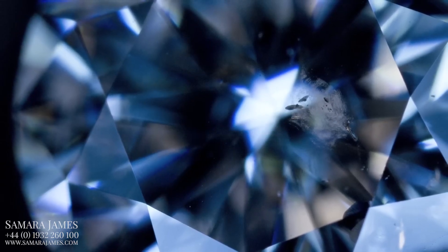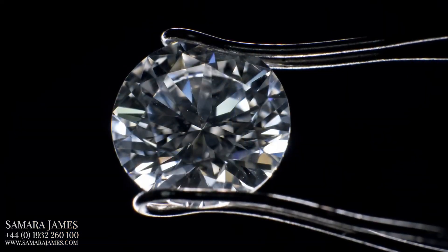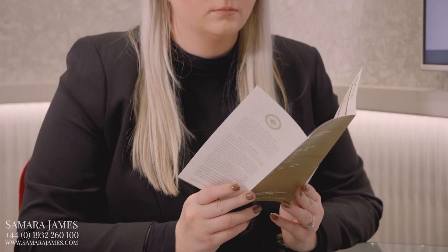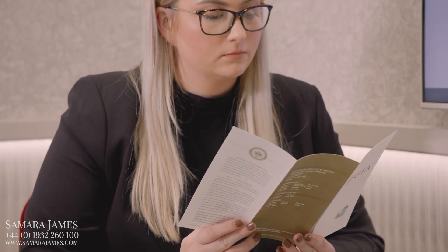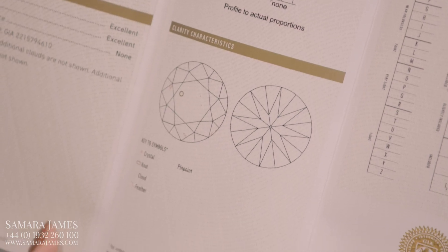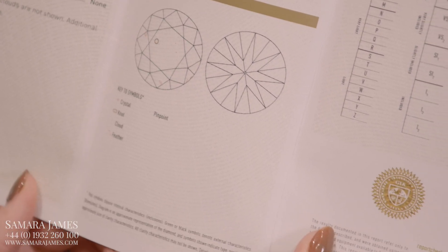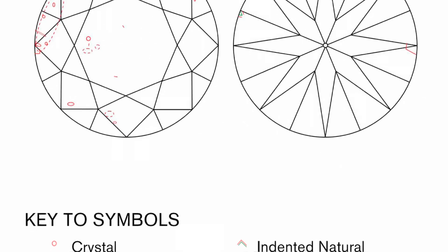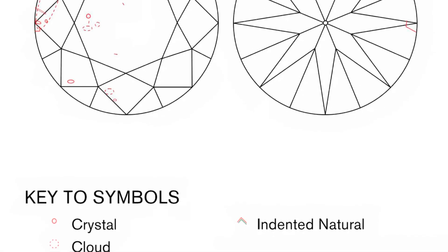Identifying the exact mineral or impurity that's been trapped within the diamond billions of years ago is almost impossible without a laboratory. But by looking at the shape and the structure of the inclusion, specific names can be given to certain types. When you look at a diamond report, you'll often have a clarity characteristics line or an inclusion map with a key. This is telling you what the inclusions look like in your diamond and, in the case of the inclusions map, where they're positioned within the stone on a two-dimensional plane.